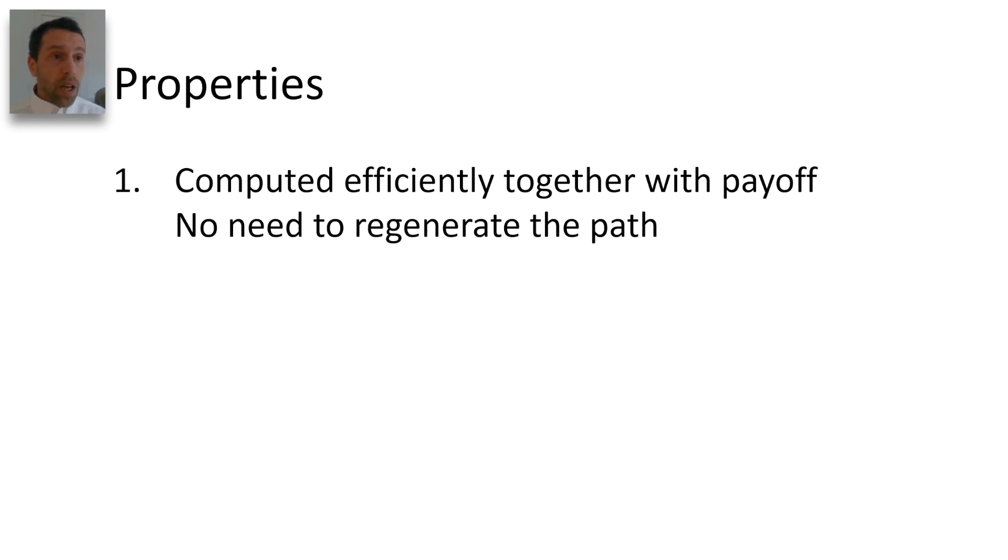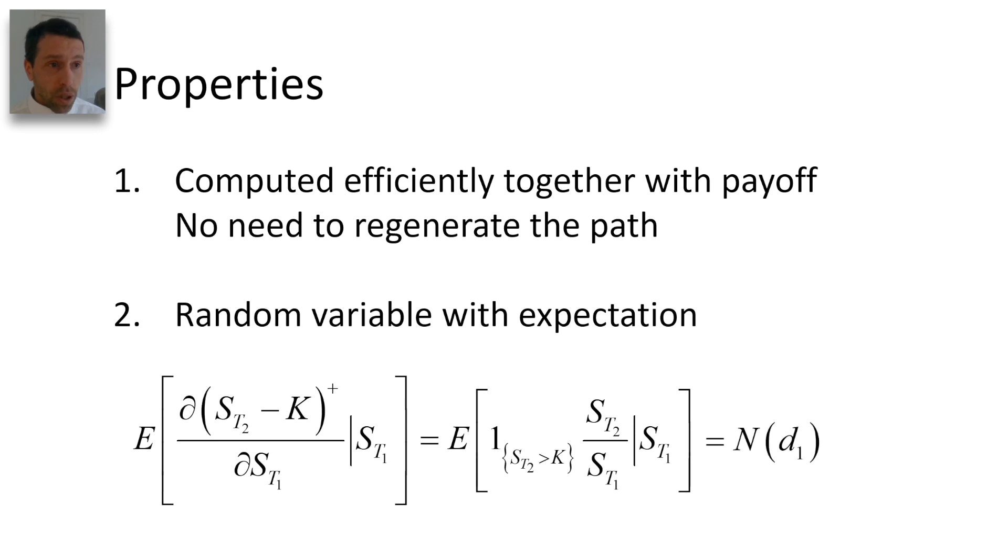along a path, without needing to regenerate the path. It is also a random variable, and its expectation is N(d1), the Black and Scholes delta.